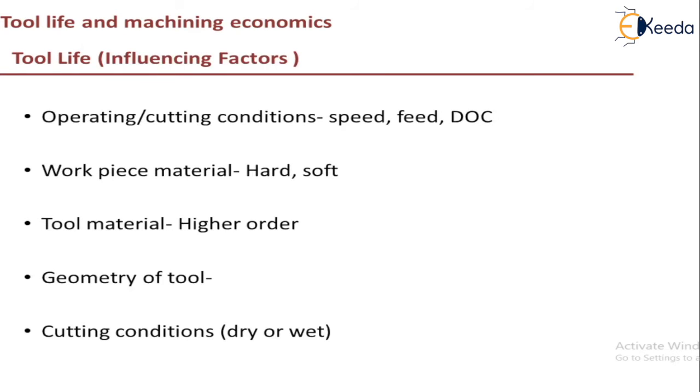Influencing factors for tool life are the operating or cutting conditions, that means the speed, feed and depth of cut. So higher the speed, higher the feed and higher the depth of cut, the tool wears out faster. That is, tool life decreases as you increase the speed, feed and depth of cut. And then we have a workpiece material. That is, if you are cutting a hard material or a soft material, if you are cutting a hard material, then the tool wears out faster than a soft material.